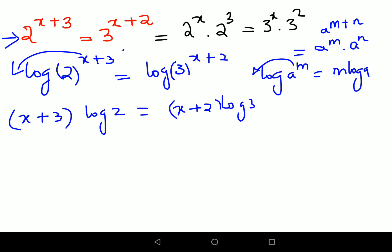Now still we are not able to get our own things right, so what we'll do in this case is we will open the brackets. What happens is we have x log 2 plus 3 log 2 equals x log 3 plus 2 log 3.